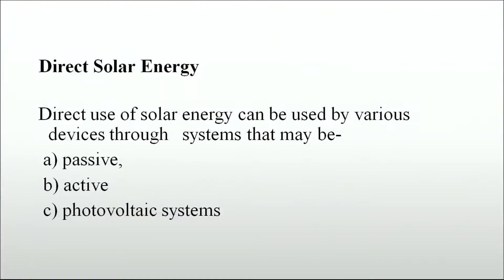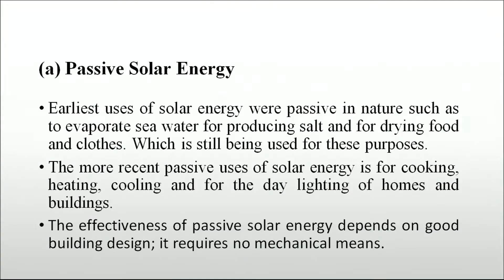Direct use of solar energy can be achieved through systems that may be passive, active or photovoltaic. The earliest uses of solar energy were passive in nature, such as evaporating sea water for producing salt and drying food and clothes. More recent passive uses include cooking, heating, cooling and day lighting of homes and buildings. The effectiveness of passive solar energy depends on good building design and requires no mechanical means.